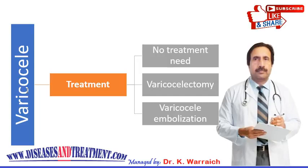Varicocelectomy is the main surgical option, performed in a hospital. The urologist will go through the abdomen to the pelvis and tie off or cut those abnormal veins. Blood can then flow around the abnormal veins to the normal ones. You will need to talk to your doctor about how to prepare for the surgery.